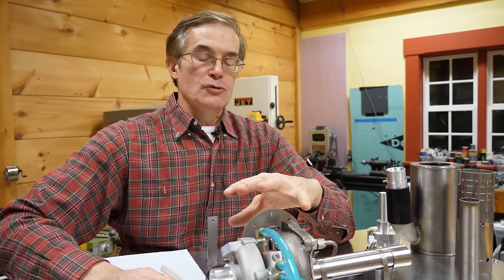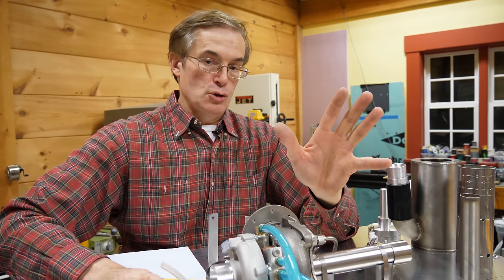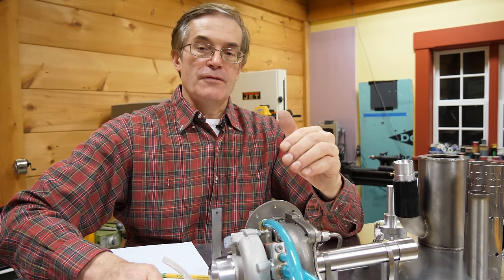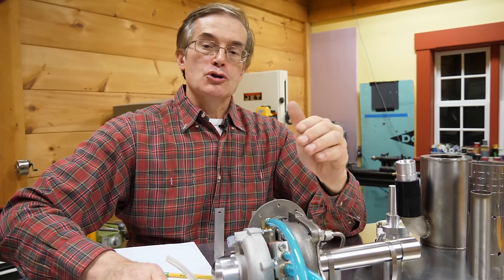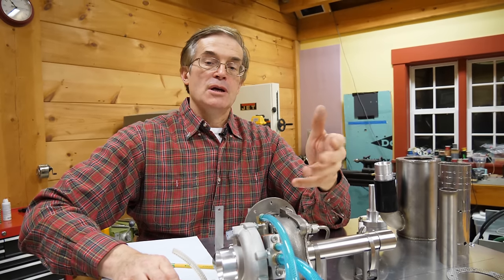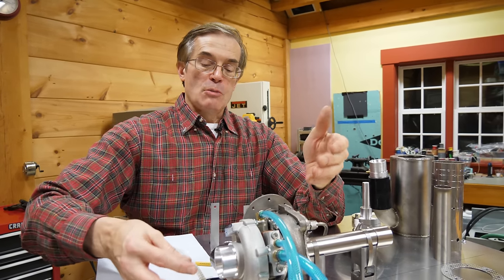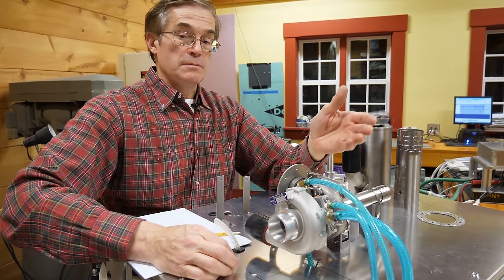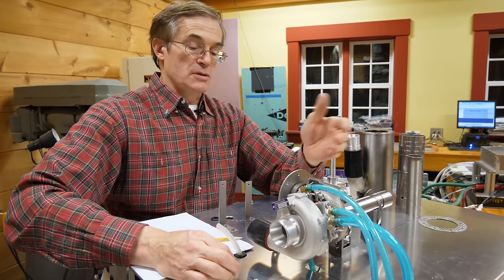The inducer will determine the amount of thrust you can make because it controls the amount of air. As a rough guideline, if you do everything right, and I'm sure we probably haven't, you can expect to get about 10 pounds of thrust per square inch of cross-sectional area in your inducer, or 8 newtons per square centimeter. The smallest turbochargers might make eight or nine pounds of thrust and the largest can top 200 pounds of thrust.